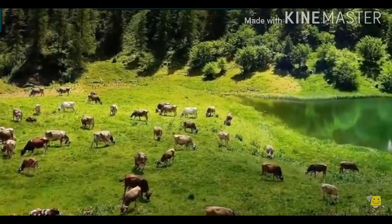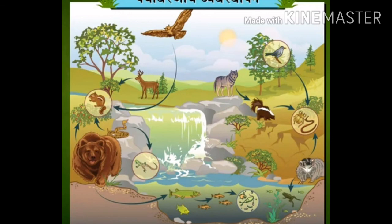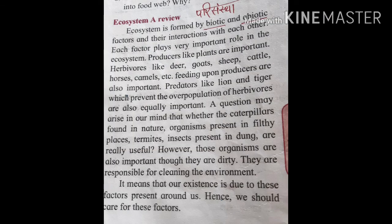Dear Students, we know about ecosystem and its components. Here is a review. Ecosystem means Parishamstha. Ecosystem is formed by biotic and abiotic factors and their interactions with each other. Each factor plays a very important role in the ecosystem.